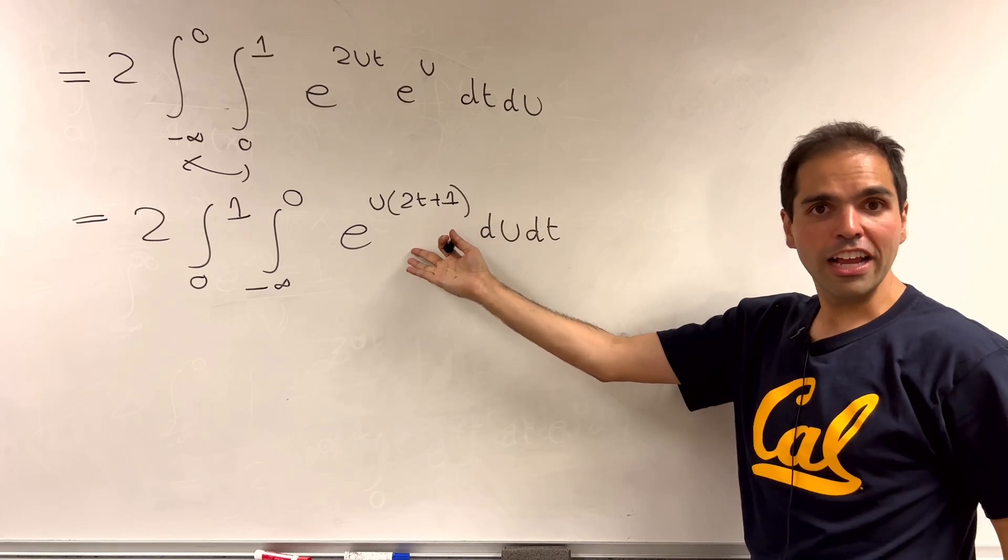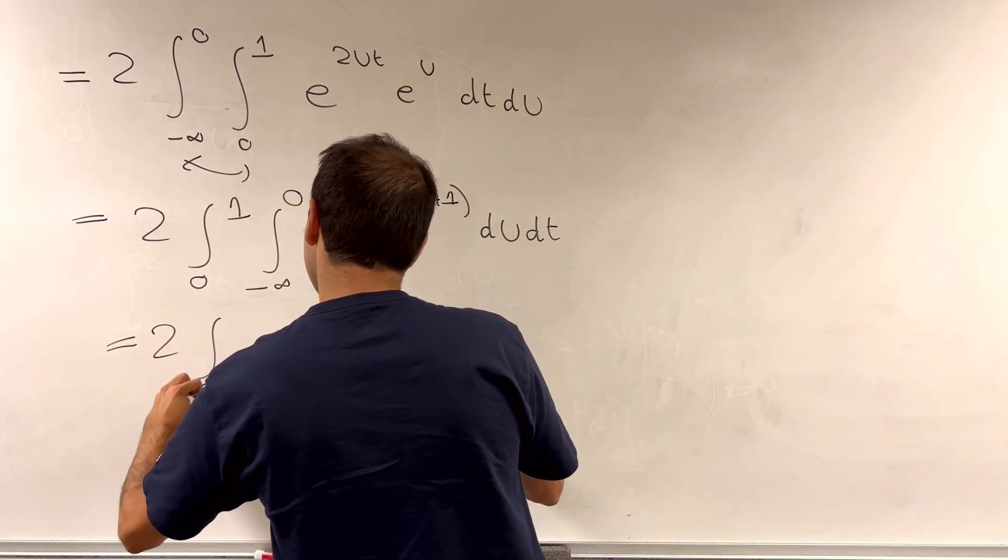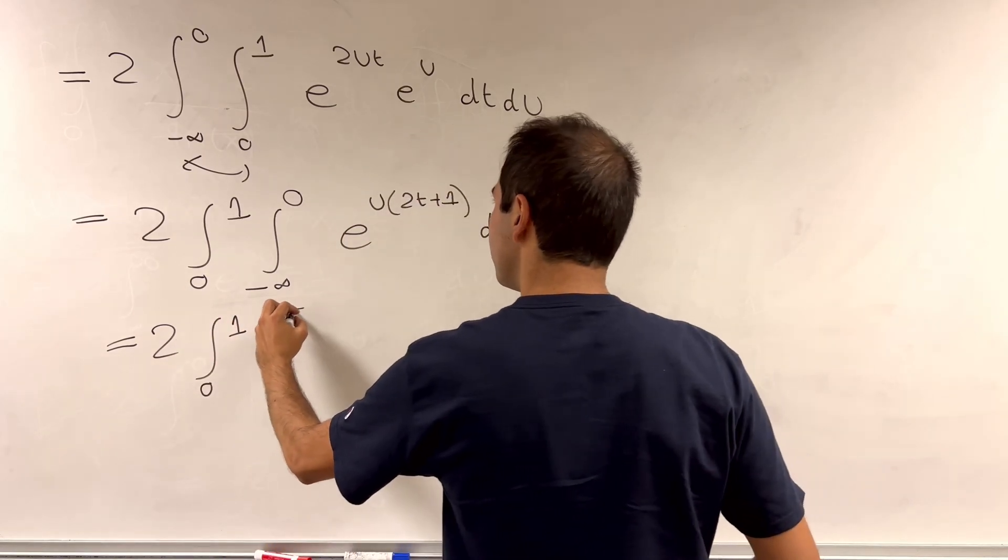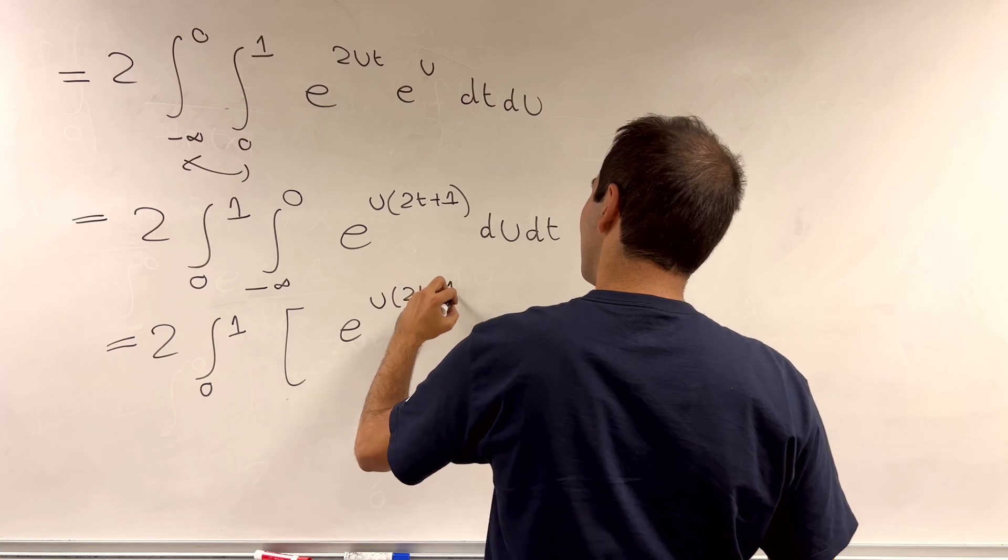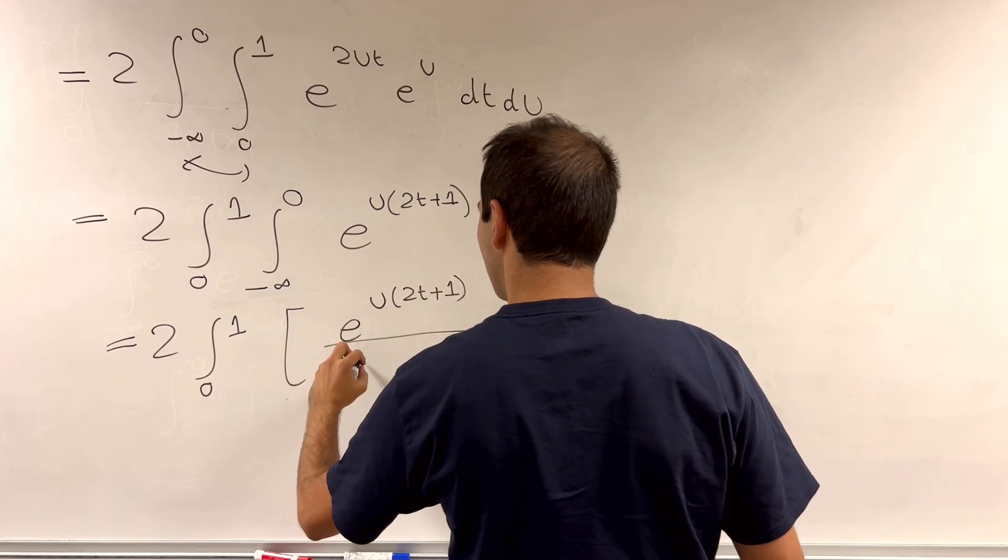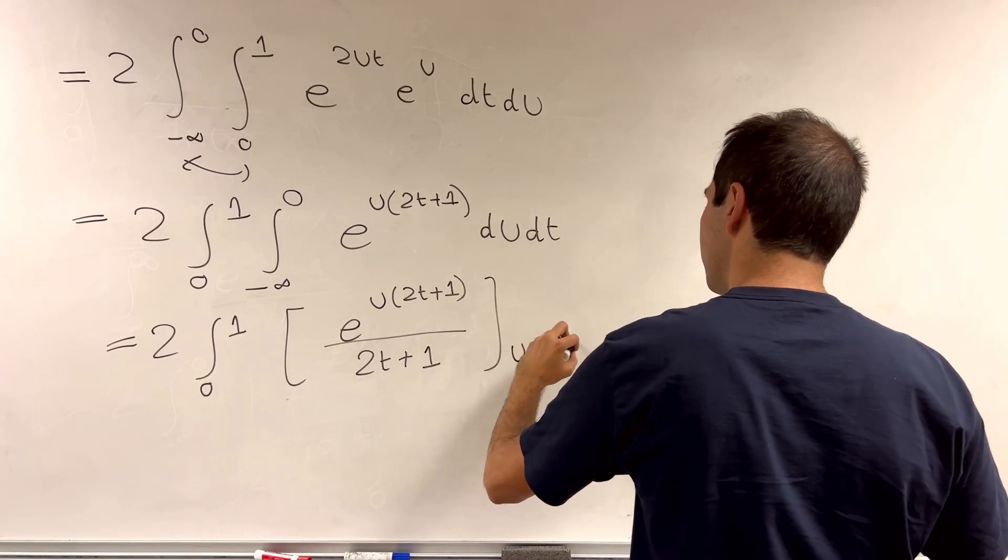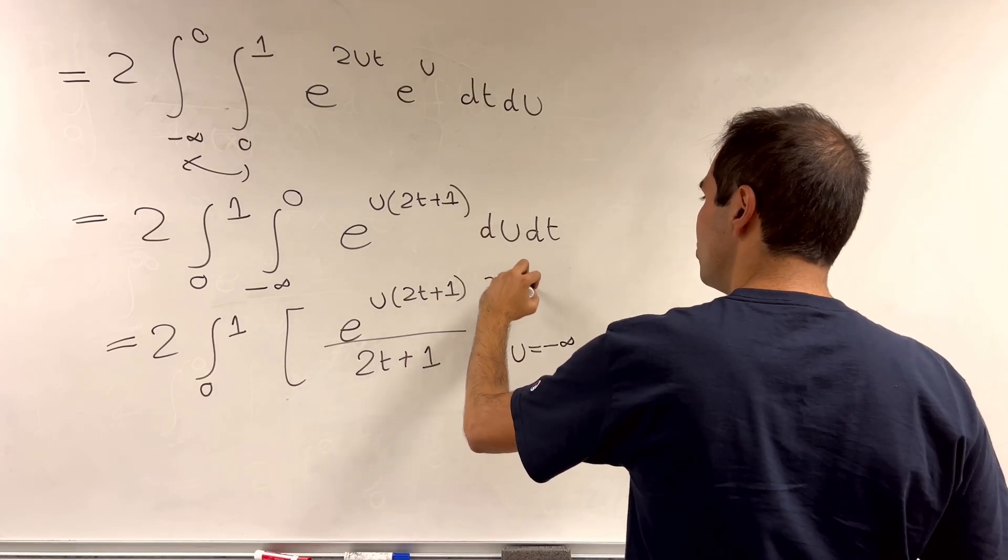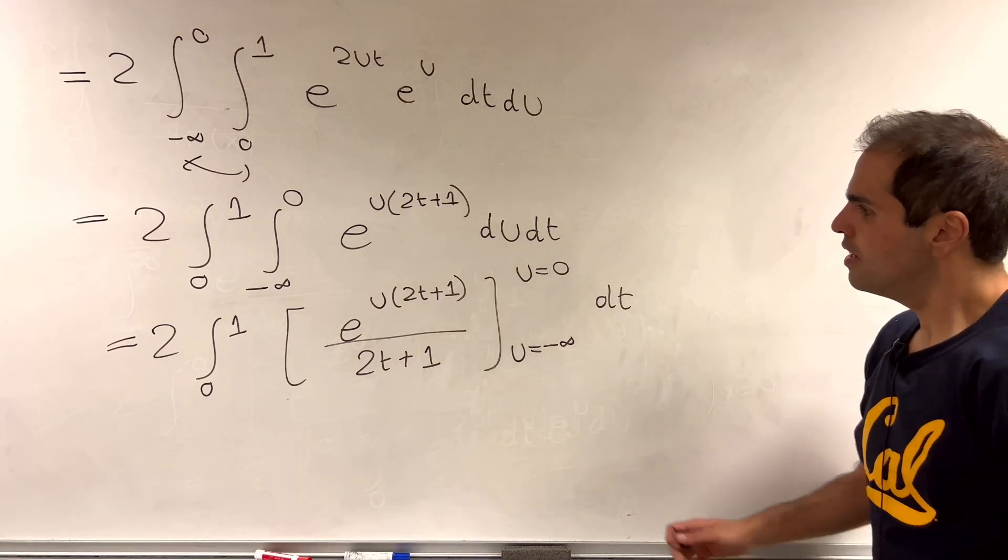And now we can find an antiderivative with respect to u. So it's 2 times integral from 0 to 1 e of u 2t plus 1 over 2t plus 1 from u equals minus infinity and u equals 0 with respect to dt.